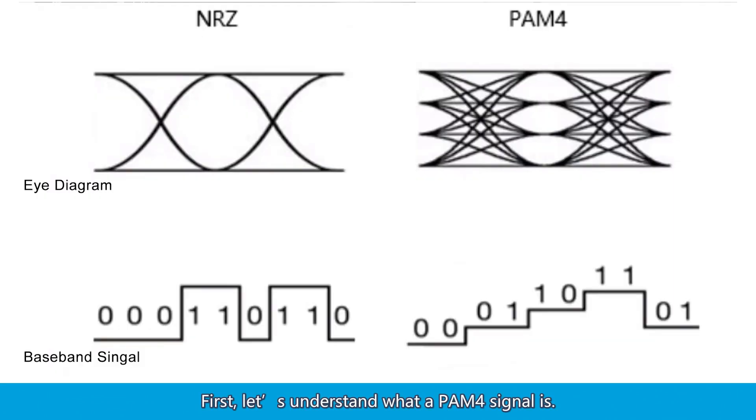First, let's understand what a PAM-4 signal is. PAM-4 stands for four-level pulse amplitude modulation. It uses four different signal levels for transmission modulation. As a popular next-generation high-speed signal interconnect technology, PAM-4 signals have two additional levels compared to traditional NRZ, non-return-to-zero, signals.